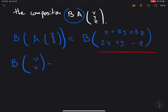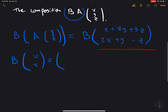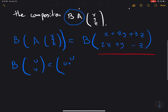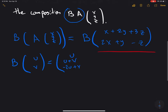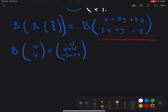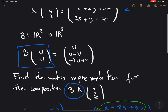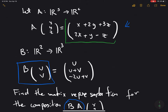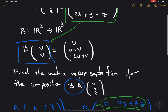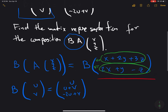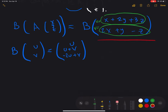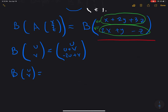That gives me B of this expression, which can be written using u and v — the same as what we had: u, u plus v, and minus 2u plus v — by setting the first component to be u and the second to be v. Notice that what we're doing is just grabbing the output of the first function and plugging it into the second function. So this is just a matter of finding what this is in terms of x, y, and z, which means the first component is x plus 2y plus 3z.